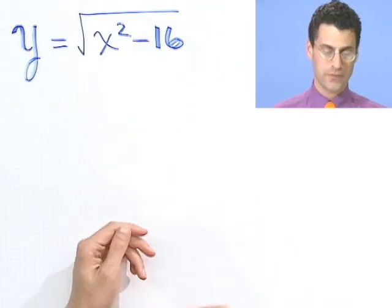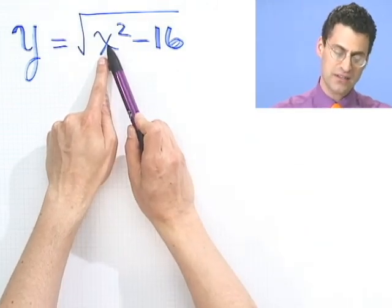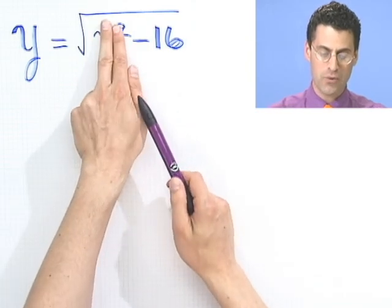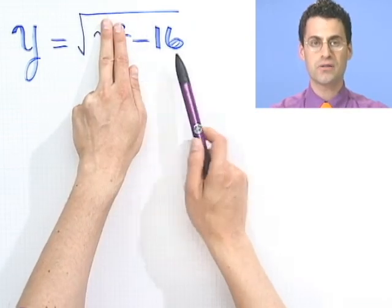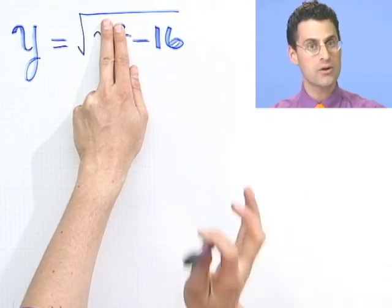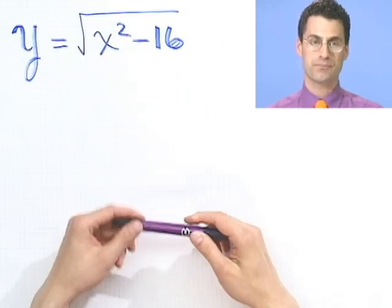For example, is the value 0 in the domain? Let's think about it. Am I allowed to have x equal 0? Well, if x were 0, look what would happen. That would go away, and I'd be taking the square root of negative 16. Ouch. Can't do that. It's not a real number. So in fact, 0 is definitely not going to be in the domain of this function.